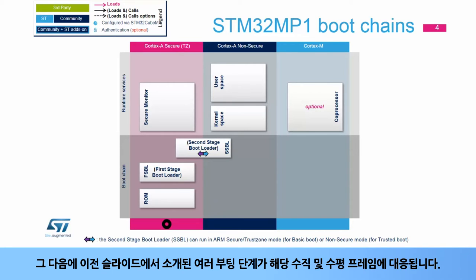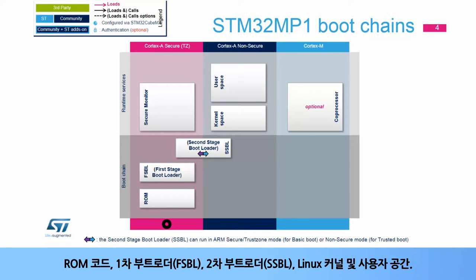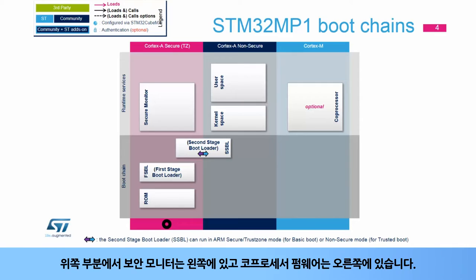Several boot stages, introduced on the previous slides, are mapped on those vertical and horizontal frames: the ROM code, the first stage bootloader, the second stage bootloader, the Linux kernel, and user space. On top of that, the Secure Monitor is on the left, and the co-processor firmware on the right.